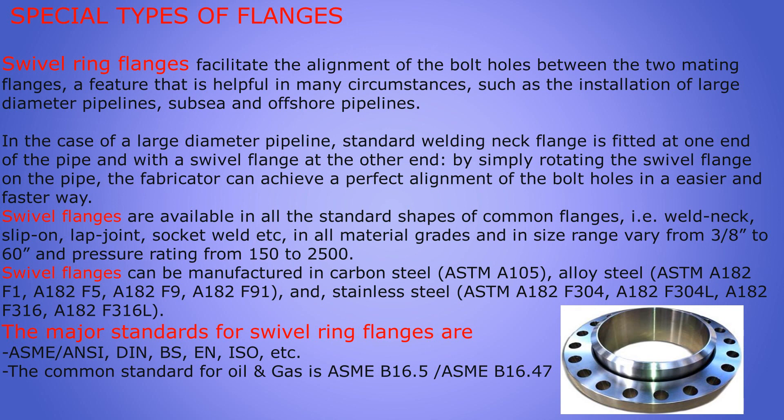Swivel ring flanges facilitate the alignment of bolt holes between two mating flanges — a feature helpful in circumstances such as installation of large diameter pipelines, particularly in subsea and offshore pipelines. In the case of a larger diameter pipe, the standard weld neck flange is fitted at one end and a swivel flange at the other end. By simply rotating the swivel flange on the pipe, the fabricator can achieve perfect alignment of the bolt holes in an easier and faster way.